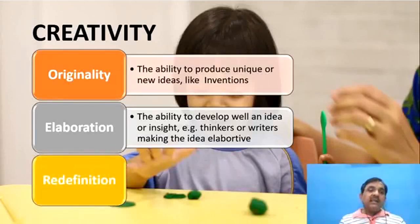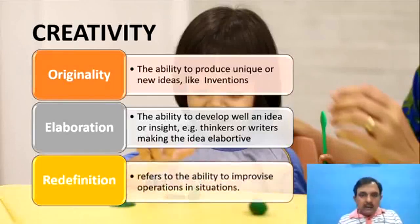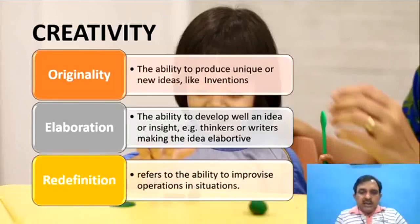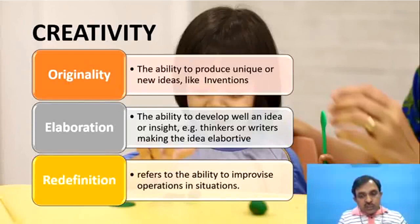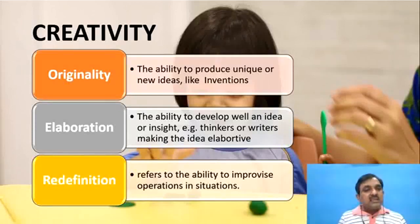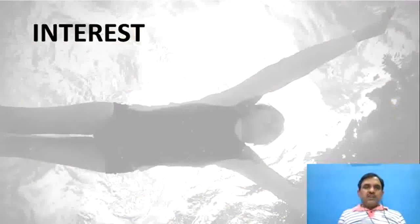Then redefinition — किसी चीज को दूसरी तरह से define करना। It refers to the ability to improvise operations in situations — अलग-अलग परिस्थितियों में चीजों को improvise करना — this is called redefinition. So creativity के ये 6 dimensions हैं।